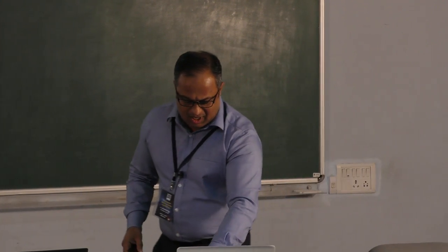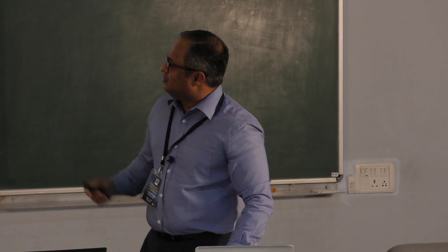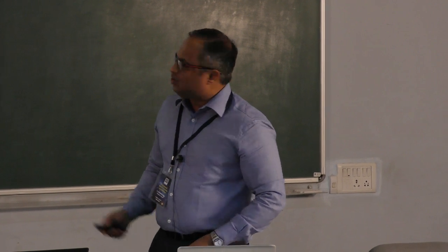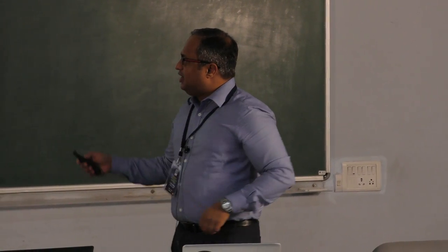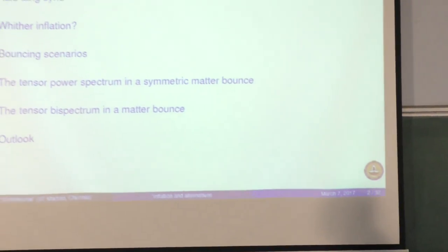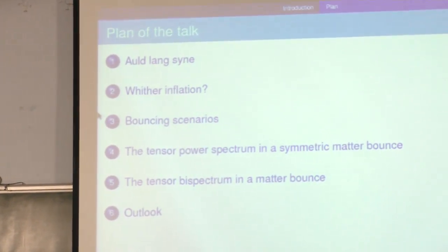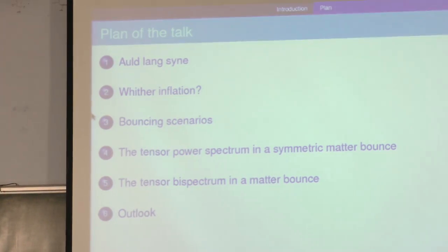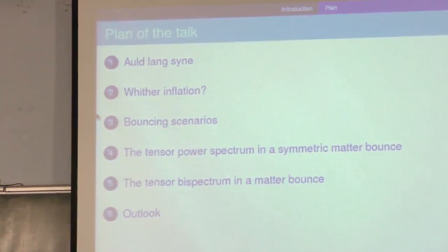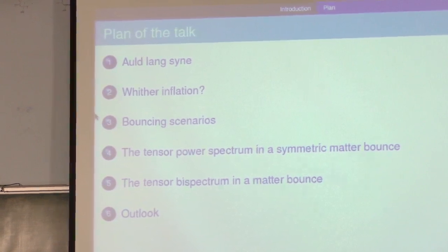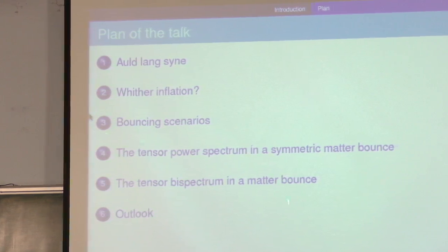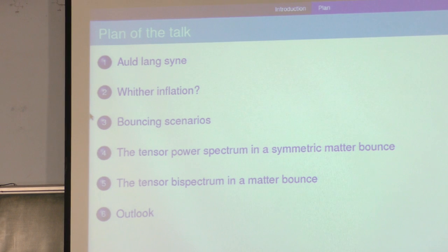Here is an outline of my talk. I will make a few brief remarks about inflation, then talk about the bouncing scenarios of my interest. I will illustrate how you can generate a tensor — I will focus on tensors because they are simpler. Scalars need more modeling and you need crazy models to drive bounces. I will focus on tensors: it's easy to illustrate the growth of perturbations, how you can get scale invariant spectra, etc. Then I will talk about the tensor bi-spectrum and illustrate that it is not large.